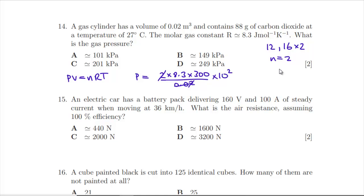Our pressure is going to be equal to 2 times 8.3 times 300 Kelvin divided by 0.02. We can cancel that 2 with that 2 and multiply by 10 to the 2, so that is 24.9 times 10 to the 4. Well I'm hoping that's going to be D—is that right? Yeah, so we take one of those, make it 249 kilopascals. Yep, so that's 14.